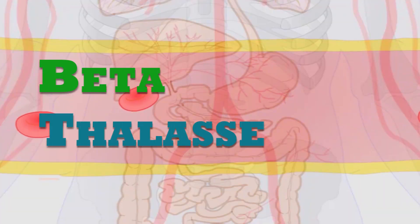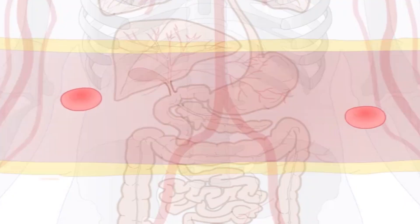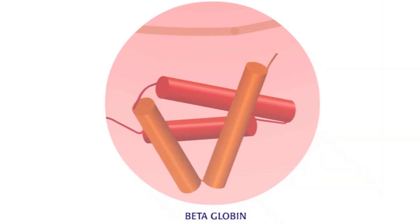Beta thalassemia is a recessive inherited blood disorder. Beta thalassemia major, also known as Cooley's anemia, happens when the body is unable to make an important blood protein called beta globin.